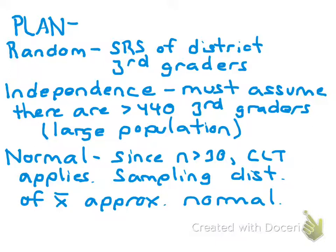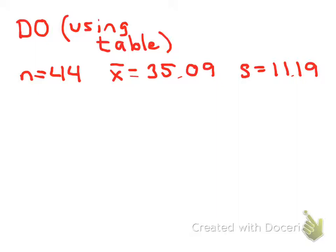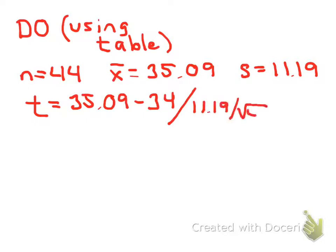For the Do part, I'll show two methods: using a t-table and using the calculator. Using the table: I calculate summary statistics — there are 44 observations, X-bar is 35.09, which is above the national average of 34, and the sample standard deviation is 11.19. Plugging into the formula — taking X-bar, subtracting the hypothesized mean, and dividing by the standard error — gives a test statistic of T equals 0.646. Getting the p-value from a table is a bit tricky, so let's pull up a t-table.